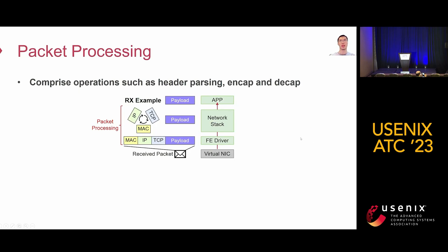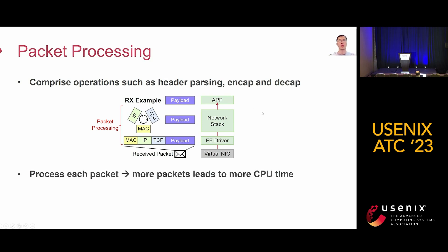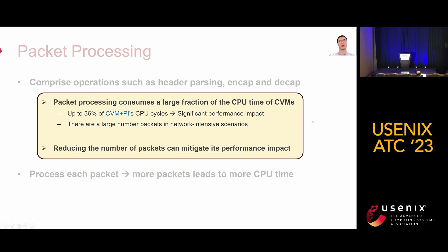Third is the packet processing tax. Packet processing comprises operations such as header parsing, encapsulation, and decapsulation. The Rx example shows that the received packet is first decapsulated into MAC, TCP, and IP headers, and then the payload is extracted for the application. Because every packet needs to be processed, more packets leads to more CPU time costs. The takeaway: packet processing consumes a large portion of CPU time, and reducing the number of packets to be processed can mitigate its performance impact.